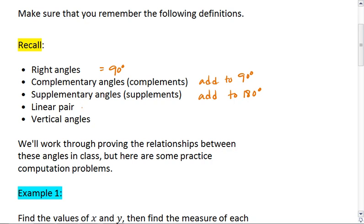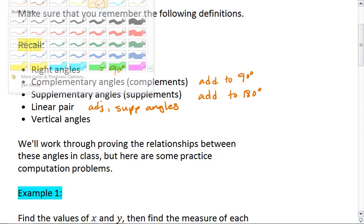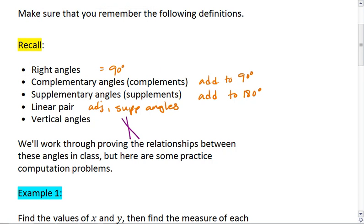A linear pair is a pair of adjacent supplementary angles. And vertical angles are when we have two intersecting lines. The angles opposite one another are vertical angles. Here is also a little sketch for a linear pair.